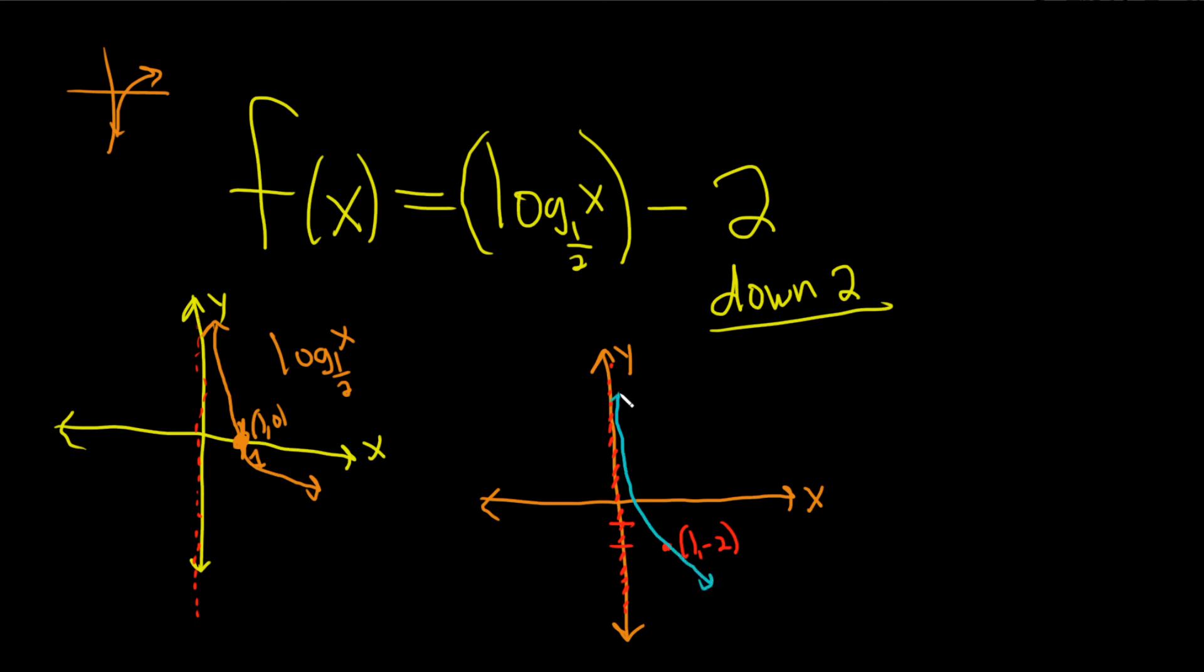Okay, that would be the graph of our function f of x. So just a rough picture. Basically it just takes the entire graph and shifts it down by 2. I hope this video has been helpful.